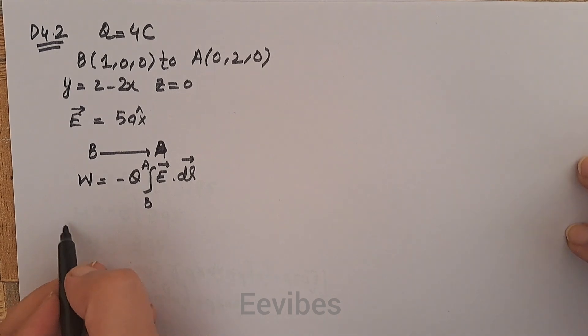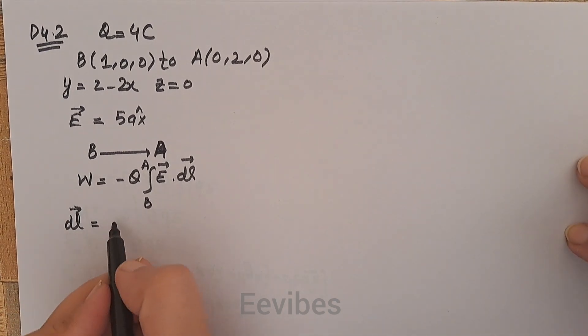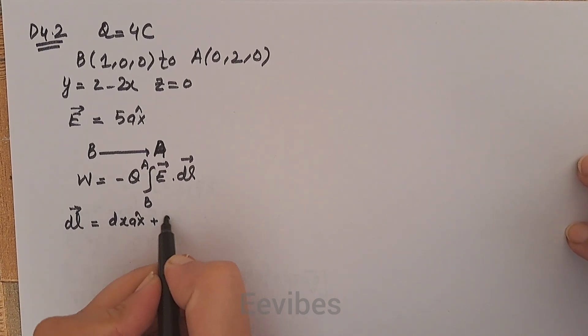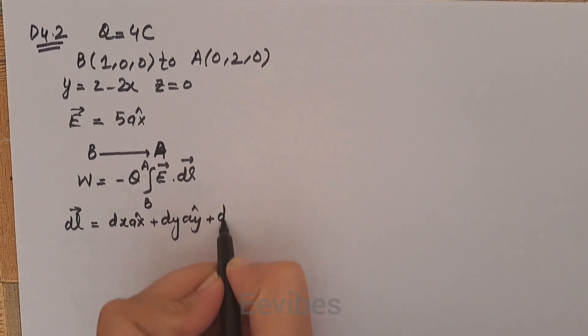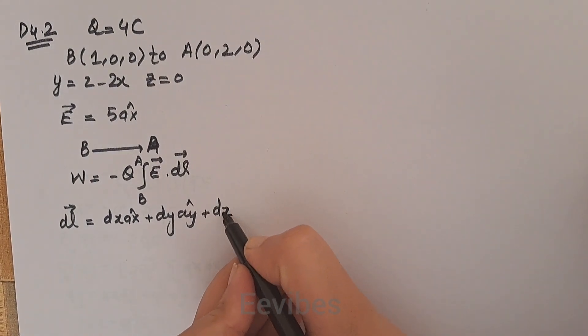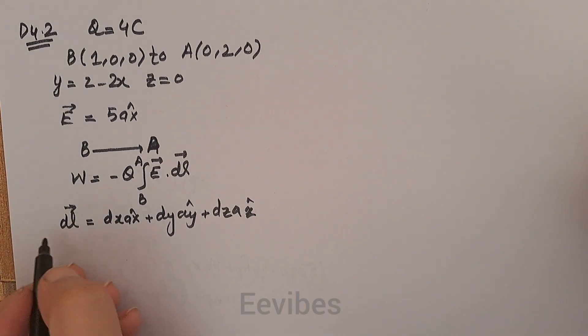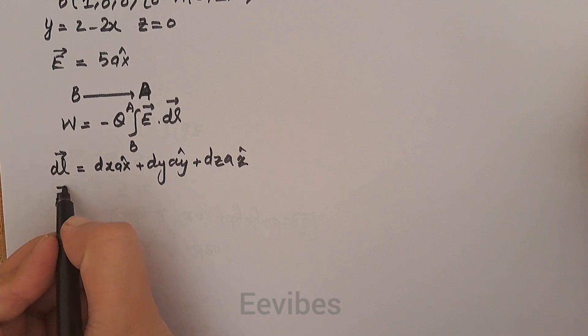We know that the differential length in the Cartesian coordinate system is given as dx ax̂ + dy aŷ + dz aẑ. The first step is to find the dot product of the electric field intensity and this differential length.